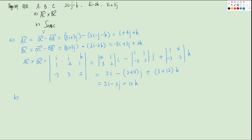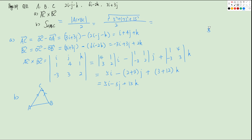For part B, finding the area of triangle ABC: since we already computed AC cross BC, we can directly use its magnitude over 2. The magnitude is the square root of 5² plus (negative 5)² plus 15², which is the square root of 25 plus 25 plus 225, equals the square root of 275. Taking out 25 gives 5 root 11. So the area is 5 root 11 over 2.